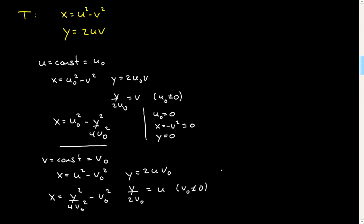And similarly here, if I can fit it in, I can just put it here. If v naught is equal to 0, I'll have something similar. I have x is equal to u squared, which is greater than or equal to 0. And again, y is equal to 0.